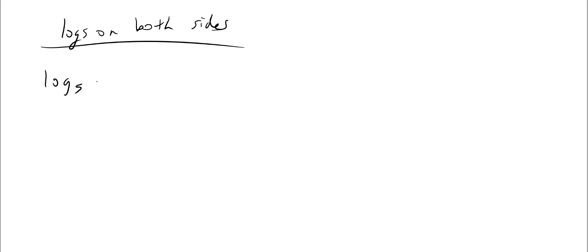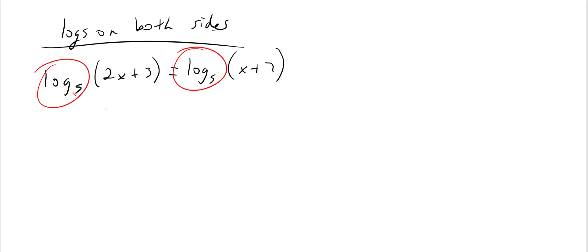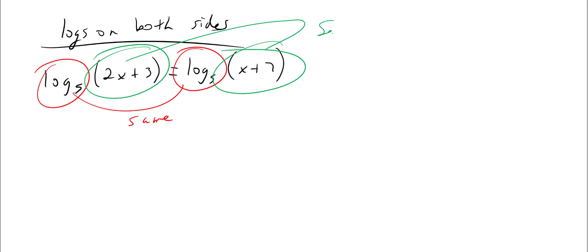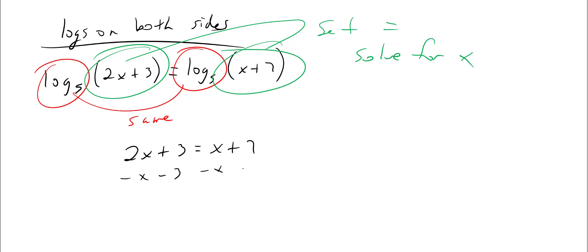Log base five of (two x plus three) equals log base five of (x plus seven). When you have the same log base on both sides, just set the arguments equal to each other and solve for x. So two x plus three equals x plus seven. Subtract x and subtract three: x equals four.